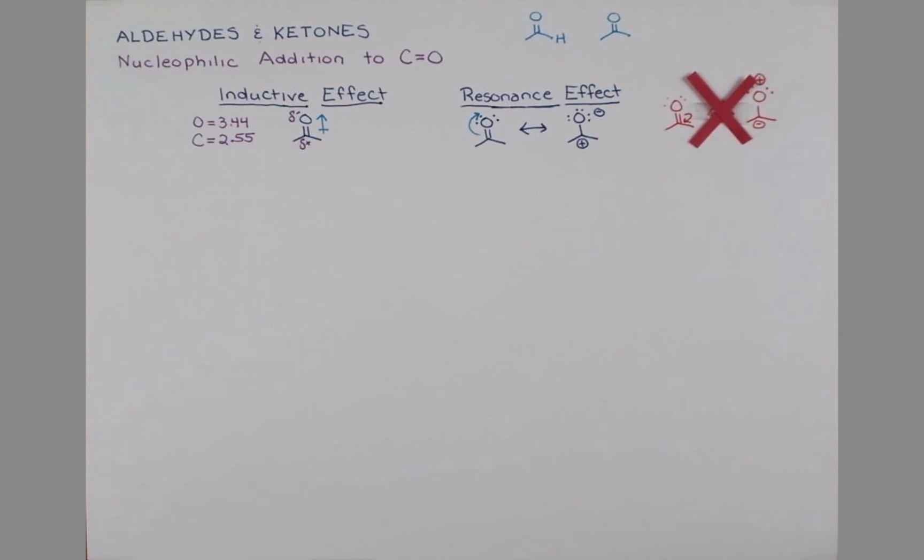Now let's look at the mechanism of how aldehydes and ketones will react with nucleophiles. Here, I've just shown a generic nucleophile, abbreviated NU. It has some extra electrons that it can share in a bond. That extra negative charge is going to be attracted to the electropositive carbon of the carbonyl. So we can draw an arrow for how the nucleophile will attack like this.